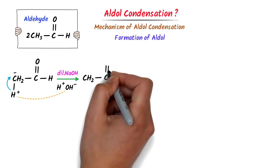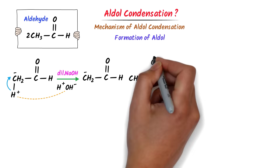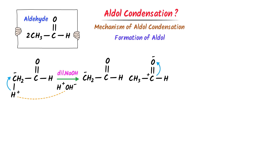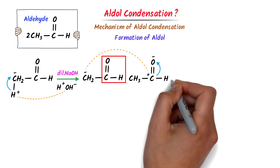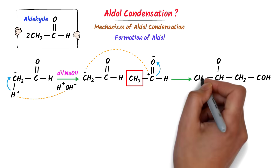I get CHO and CH₂. This carbon has a negative charge. Now I take the second molecule of aldehyde. We know that oxygen is highly electronegative — it will attract the shared pair of electrons. Hence, a partially positive charge appears on this carbon and a partially negative charge appears on this oxygen. This negative carbon will attack on this positive carbon. I take this CHO and write it here, then this CH₂, and then this CH₂.